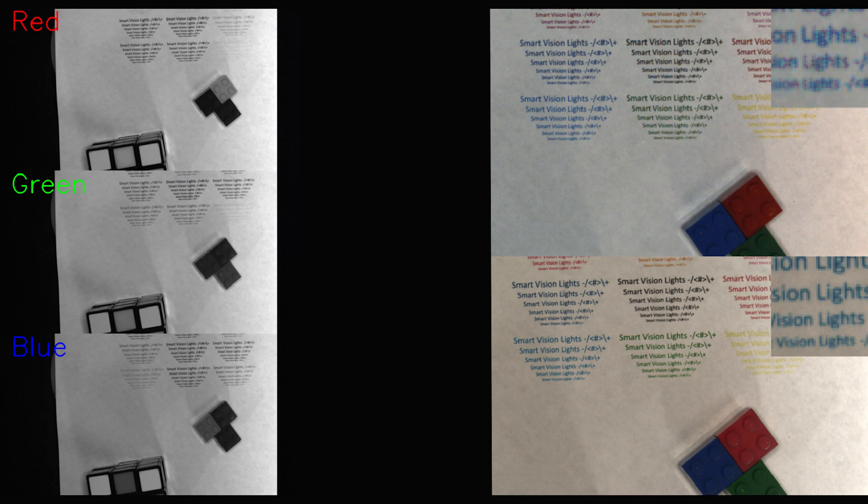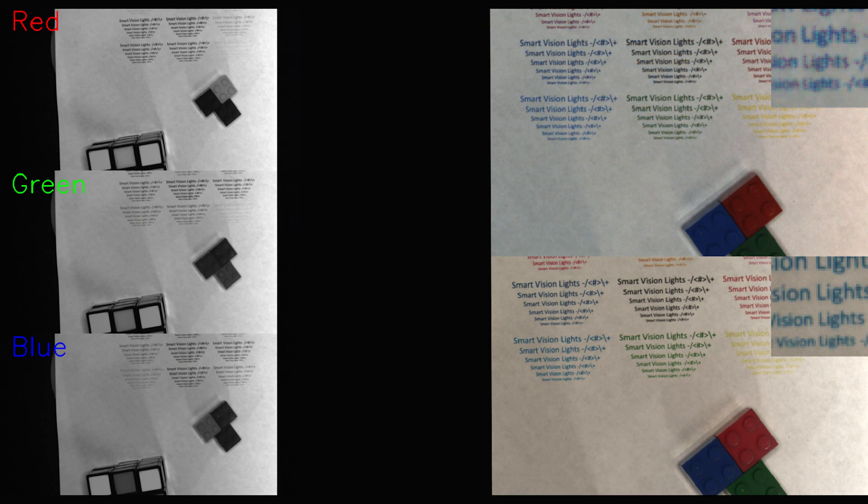If we look at the side-by-side images of text gathered from a color camera with white light and a monochrome camera using the RGB process I just described, and we then zoom down to the pixel level, you can see that the color image is fuzzier with less defined lines.